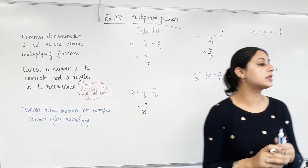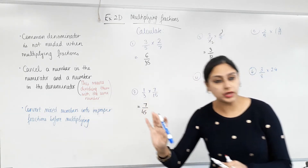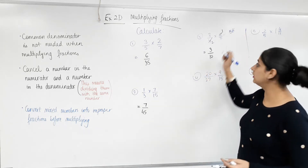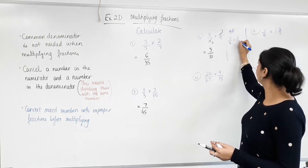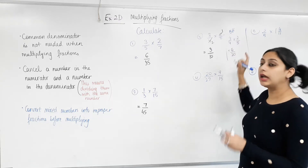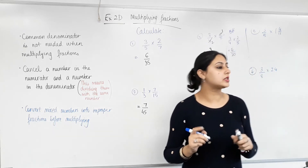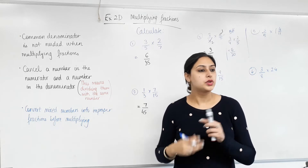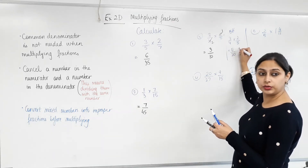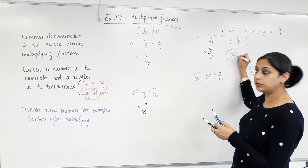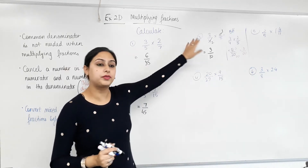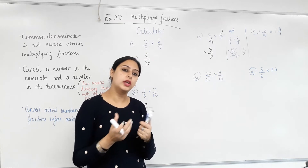What if you missed that important step — what if you did not think of cancelling? I'll redo that question. Let's say you did not cancel and you did three times two and four times five to get six twentieths. You should realise that six and twenty have some common factors — they're both divisible by certain numbers, so you can cancel now. You still get the same answer, but I don't want you to do it this way. I want you to simplify first and then multiply. Can anyone think of a good reason why?